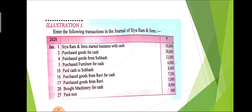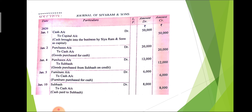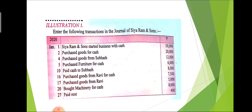The second entry on 2nd January: purchase goods for cash. When we purchase goods, we use the word 'purchase.' For purchasing goods, cash will be given, so cash reduces from the business and will be credited. The journal entry is: purchase account debit to cash account, by 20,000. The third entry: purchase goods from Subhas. Here cash is not mentioned, so that is a credit transaction. If cash is given we credit cash; if only a name is given, we mention the name.